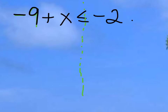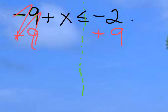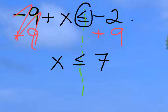We do that by doing the opposite — the opposite of negative 9 is to add 9, and that would essentially cancel that out. And of course we do the same thing to the other side, just like an equation. We'd be left with x on the left side, and on the right side negative 2 plus 9 would be 7. And instead of an equals sign, we keep this symbol, so our answer is x is less than or equal to 7.